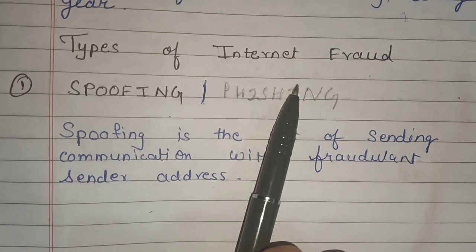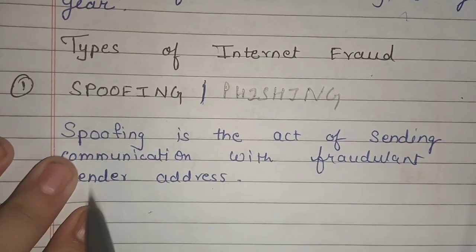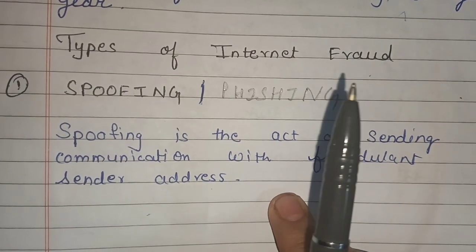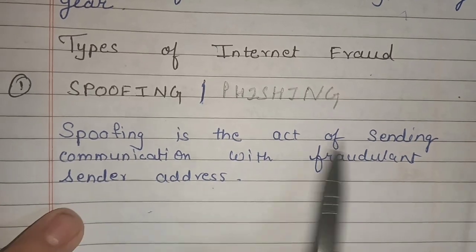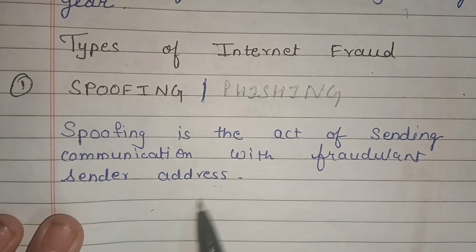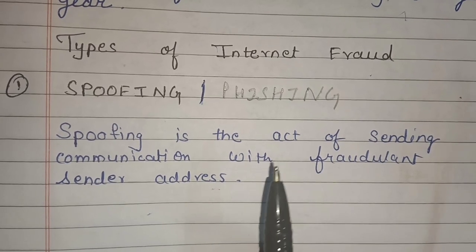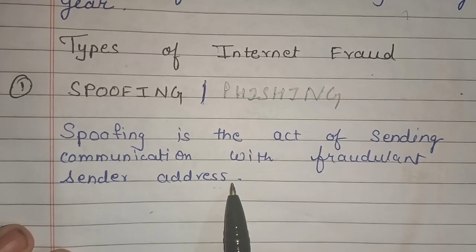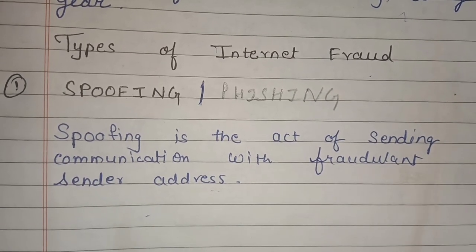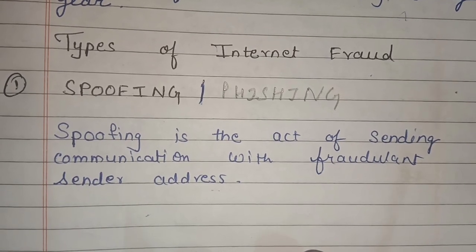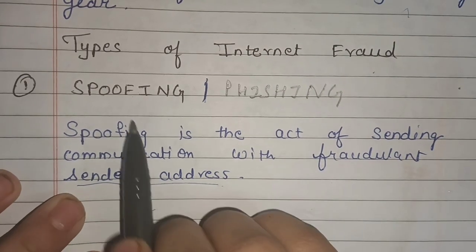How many types of internet fraud are there? I have divided internet fraud into 5 types. First is spoofing and phishing, which I covered in a previous tutorial, but I will explain briefly. Spoofing or phishing means sending fraudulent communication with a fraudulent sender address — making you think the message or email is from your bank or a legitimate financial service or company. Spoofing means the sender's address is fraudulent. Spoofing and phishing are more or less the same, though there are differences between them.